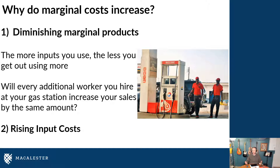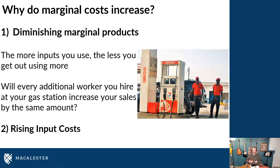The second reason is just rising input costs. Let's say I want to sell 30 million gallons of gasoline, but now I want to go out and buy another 10 million gallons. Because I'm asking for more and more gasoline, it may be the case that the local refinery also has an upward sloping supply curve — it would cost them more to make those last units of gasoline, and therefore they charge us a higher price. So the gas itself could become more expensive as we're selling more and more gasoline to consumers.